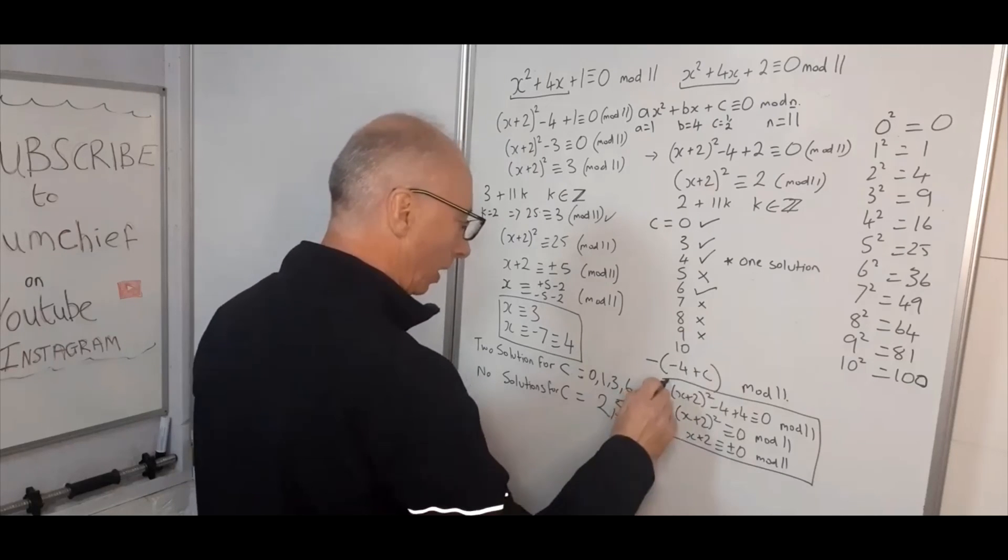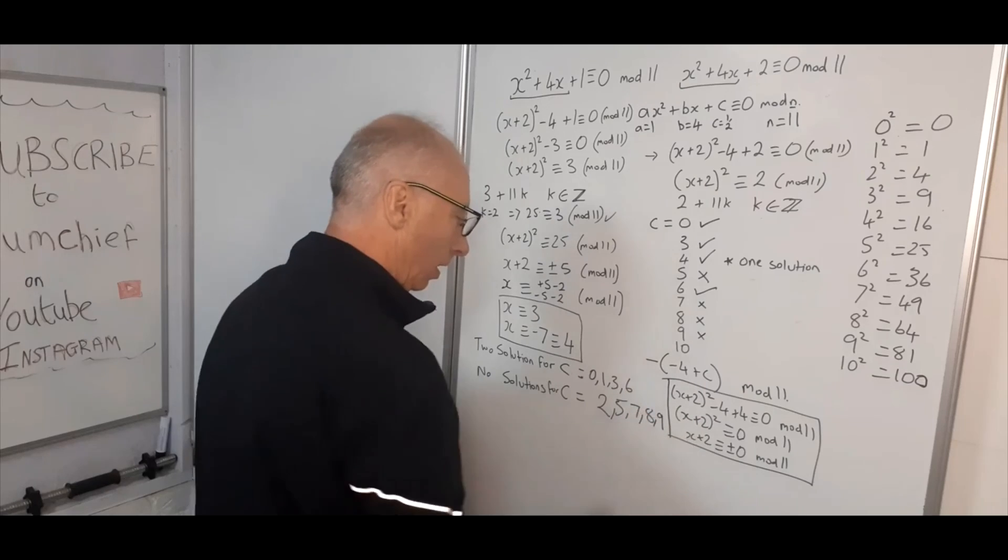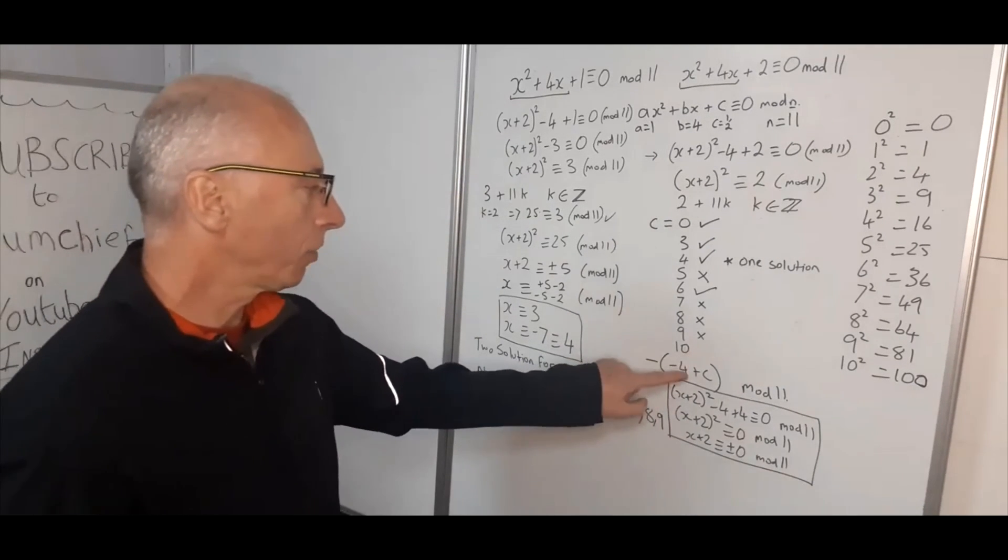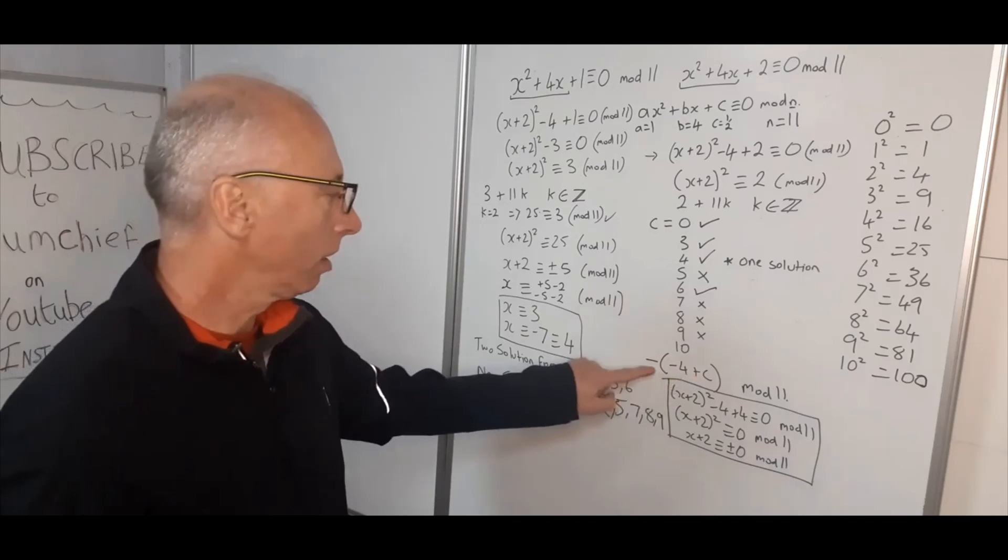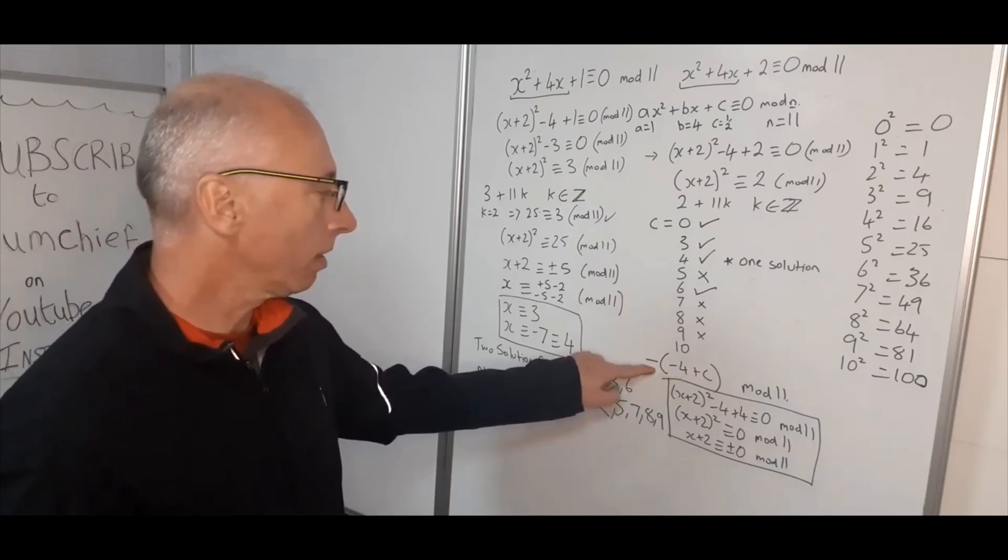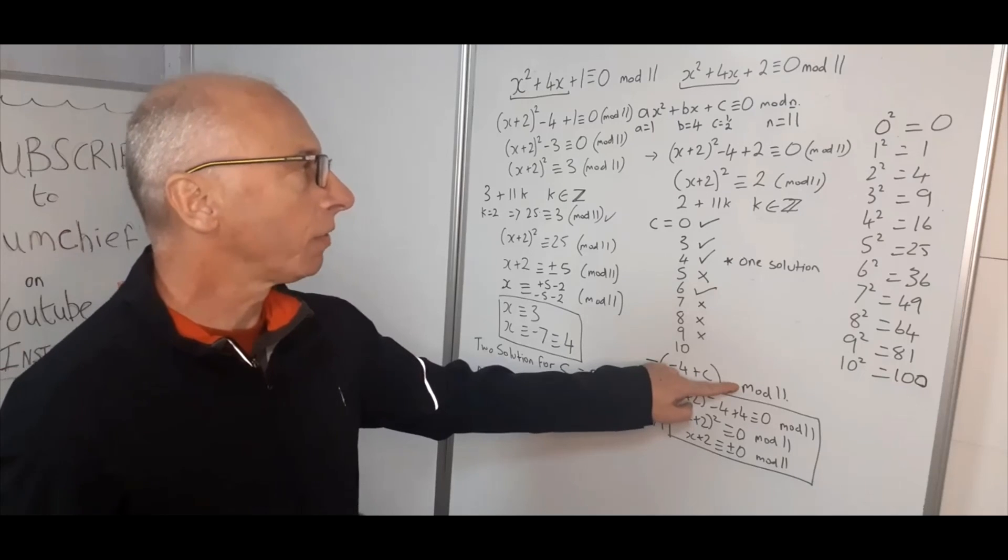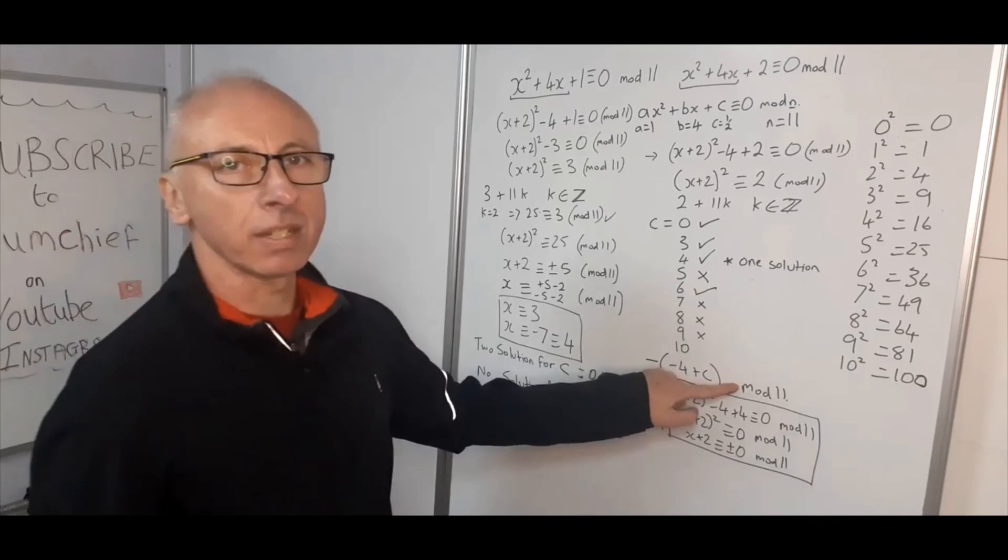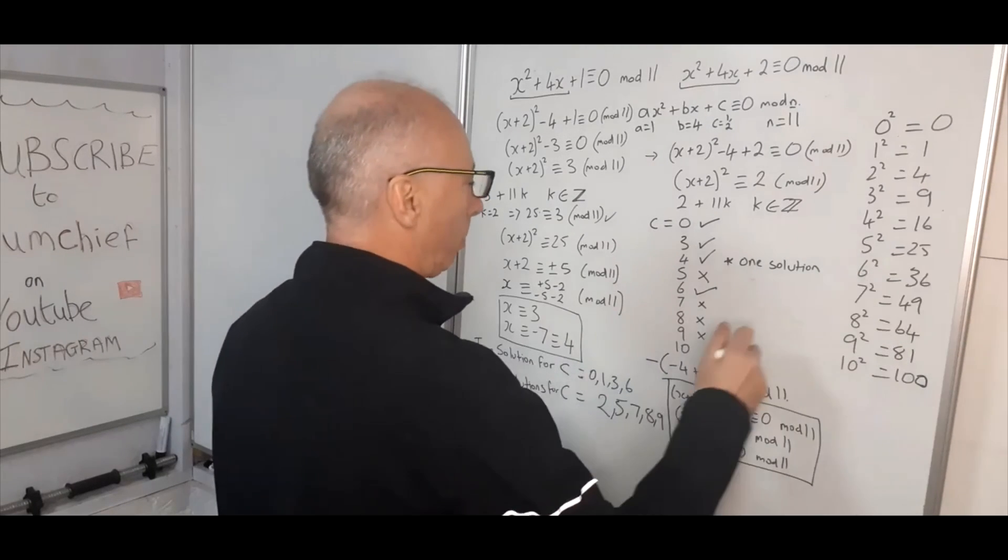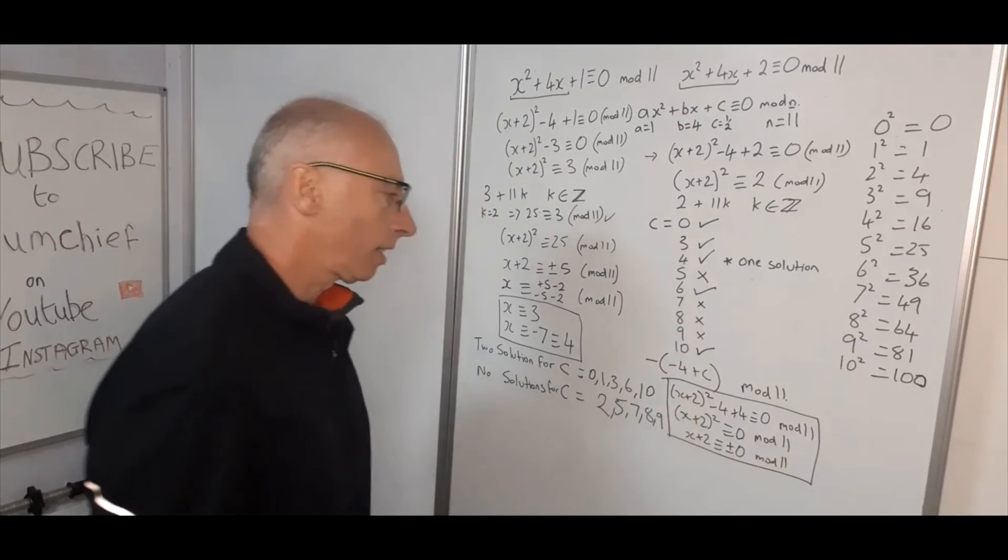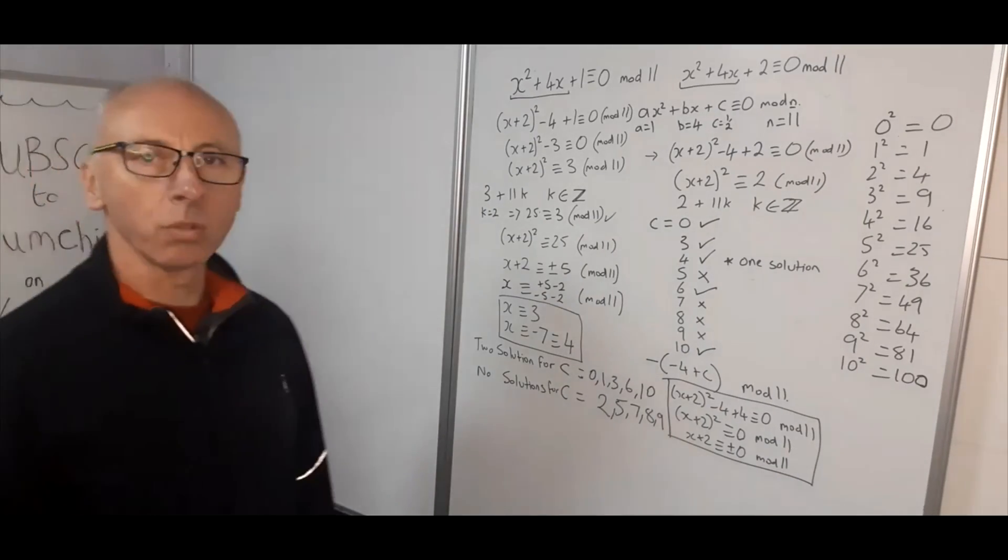Let's just change this box a little bit. Okay, last one we need to check is 10. Minus 4 plus 10 is 6. Which then gives us minus 6. Minus 6 in the modulo 11 world will give us positive 5. 5 plus 11 is 16. Perfect square there. So therefore 10, I will say, is given me there's two solutions.